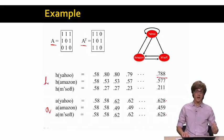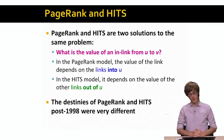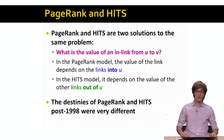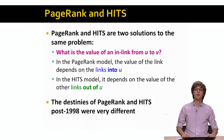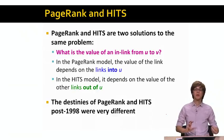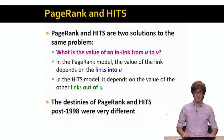Every node now has both a hub score and an authority score. Interestingly, PageRank and HITS are two solutions to the same problem: both try to answer what is the value of an in-link from node U to node V. In PageRank, a link's value depends on the number of links pointing to the source node, while in HITS, it depends on the value of other links pointed out of that node. In the web search industry, PageRank was widely adopted and is used in ranking search results even today, while HITS as a standalone method has not achieved wide industrial adoption.